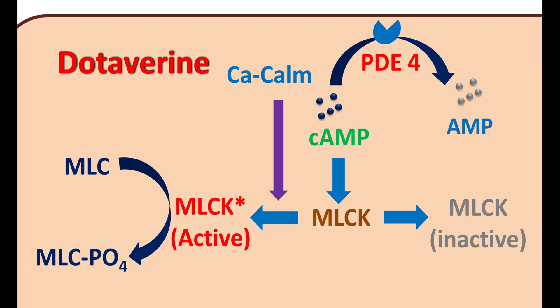Cyclic AMP causes phosphorylation of a key protein — MLCK, myosin light chain kinase. The phosphorylation of MLCK results in its inactivation. MLCK should normally be activated so that it can phosphorylate the myosin light chains. When calcium levels are elevated in the smooth muscle, calcium forms a complex with calmodulin. This calcium-calmodulin complex activates MLCK. Once activated, MLCK causes the phosphorylation of myosin light chains, converting them into phosphorylated myosin light chains. In this phosphorylated form, the myosin light chains combine with actin to form an actin-myosin complex, which results in contraction of the smooth muscle.